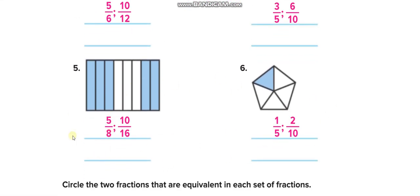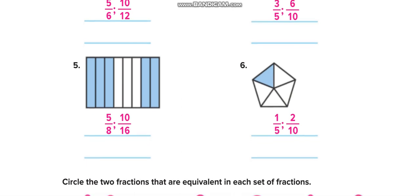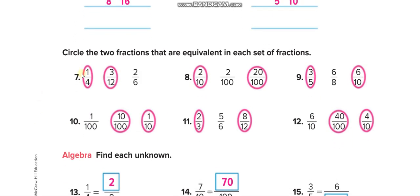Try to solve these examples by yourself and then match your answers from this video. From these questions you have to circle the equivalent fractions. For example, is one over four equivalent to two over six? If you multiply by two: one times two is two, but four times two is eight — not six, so that's wrong. If you multiply by three: one times three is three and four times three is twelve, so three over twelve is the equivalent fraction. Two over six is not equivalent to one over four.